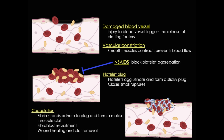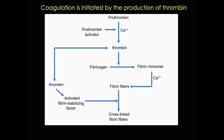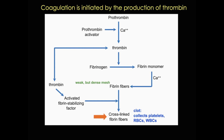I'm not going to cover the entire clotting cascade today, but I want to highlight a few important players. One of the most important steps in the cascade is the production of thrombin, an enzyme in blood plasma which causes the clotting of blood by converting fibrinogen to the fibrin monomer. Those fibrin fibers form a weak but dense mesh that will eventually cross-link and collect other cell types — platelets, red blood cells, white blood cells, and fibroblasts — to form the clot.